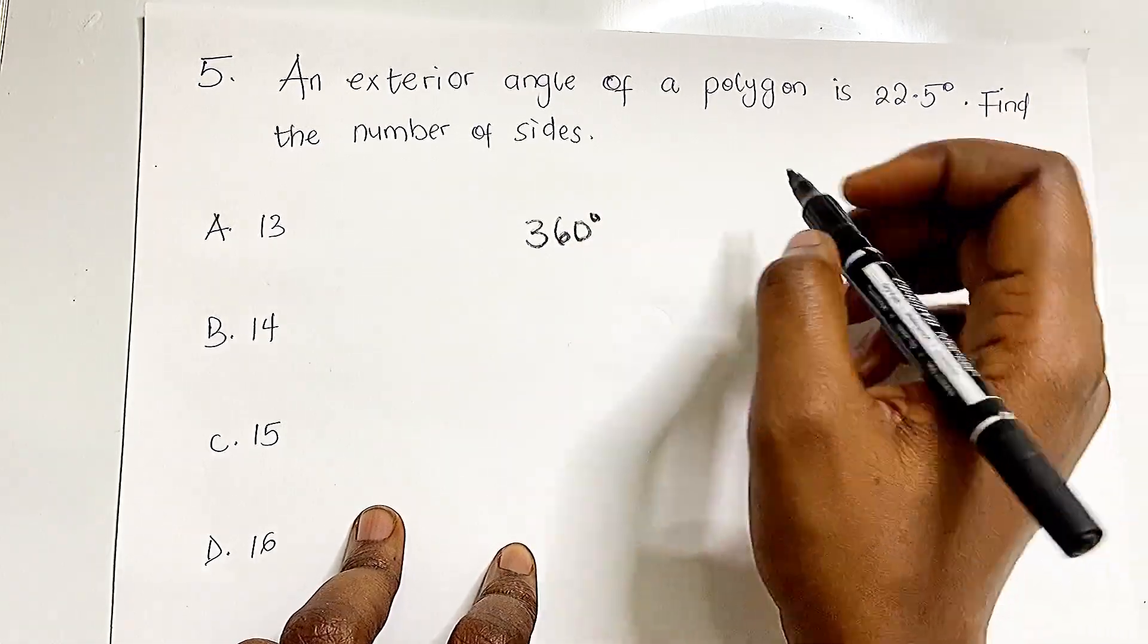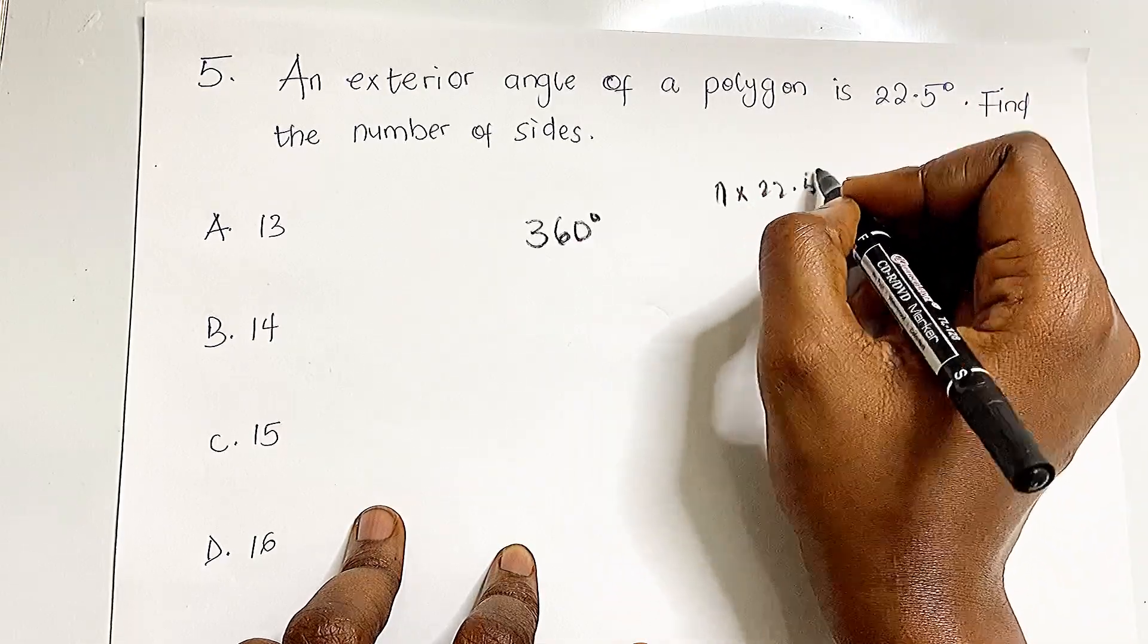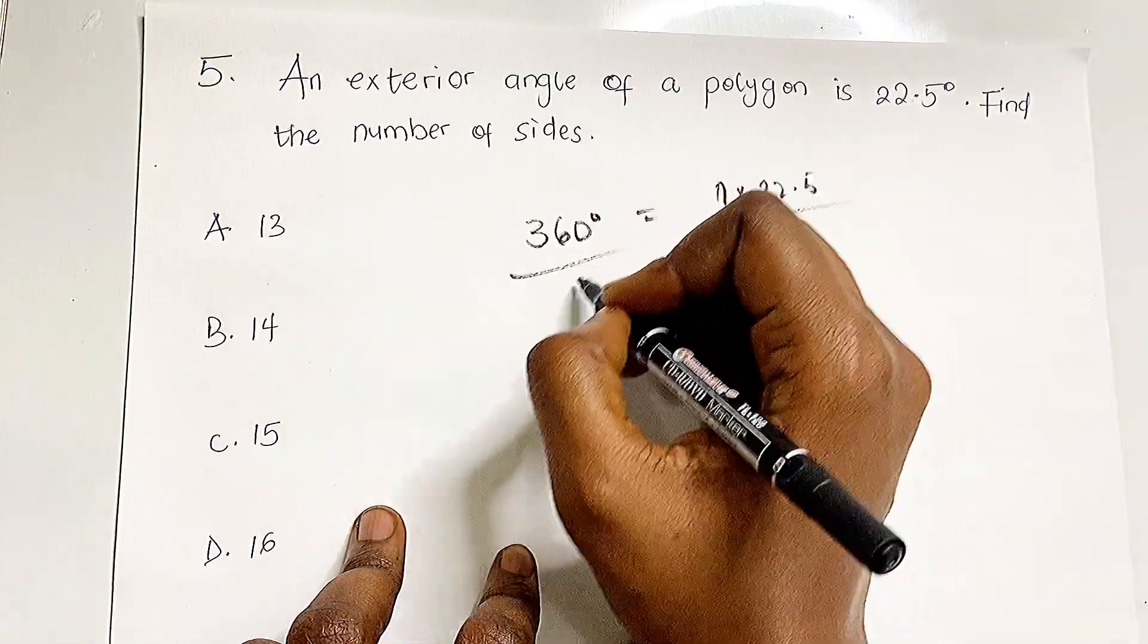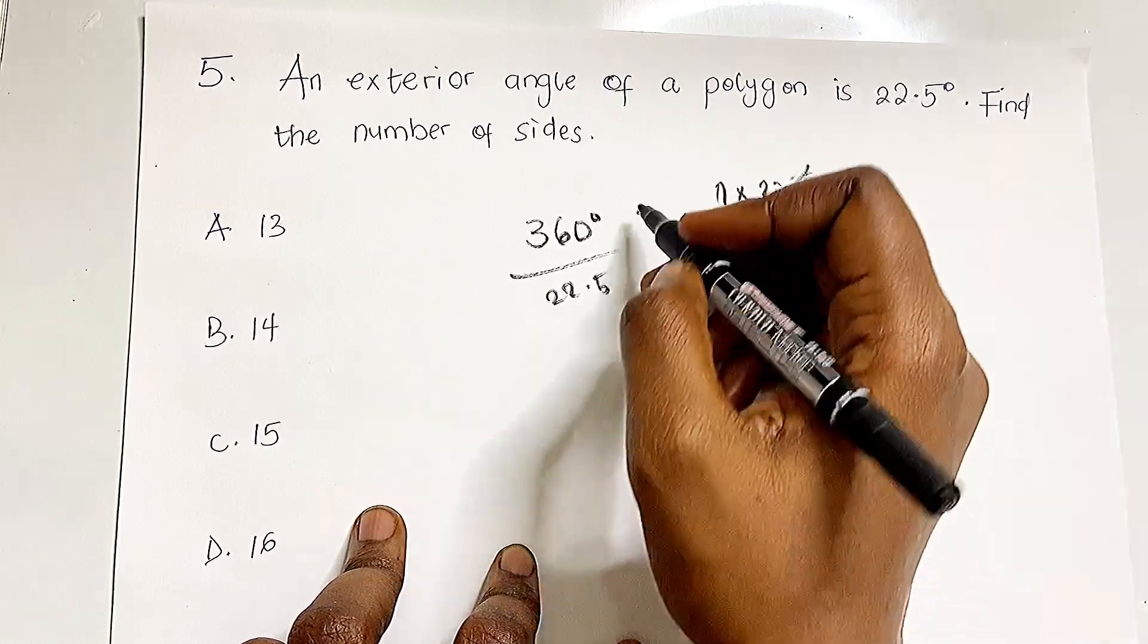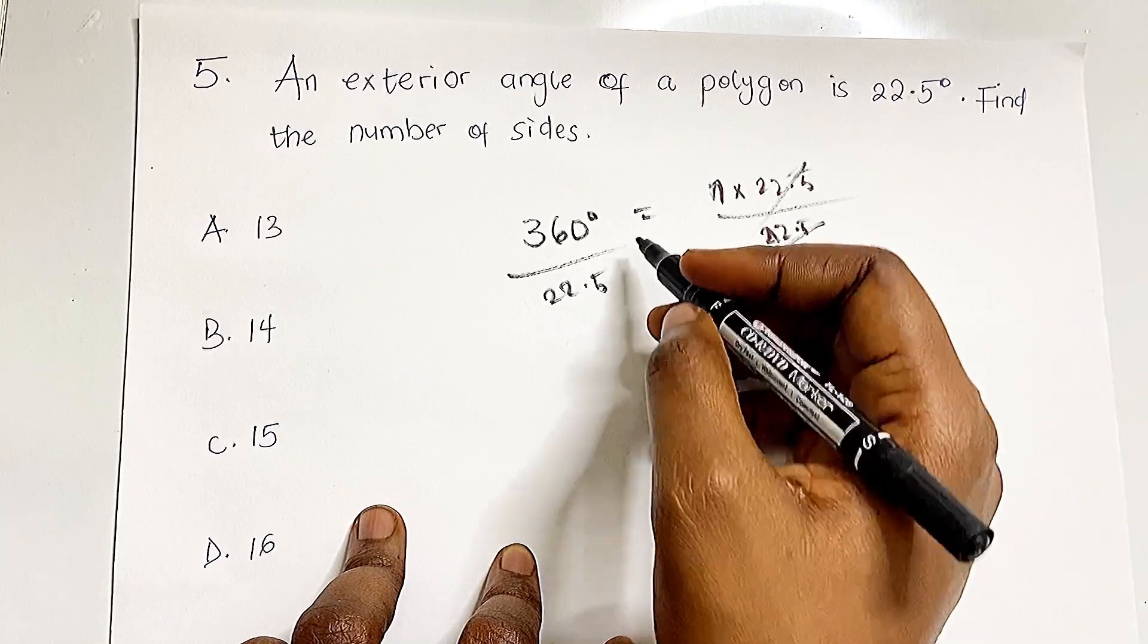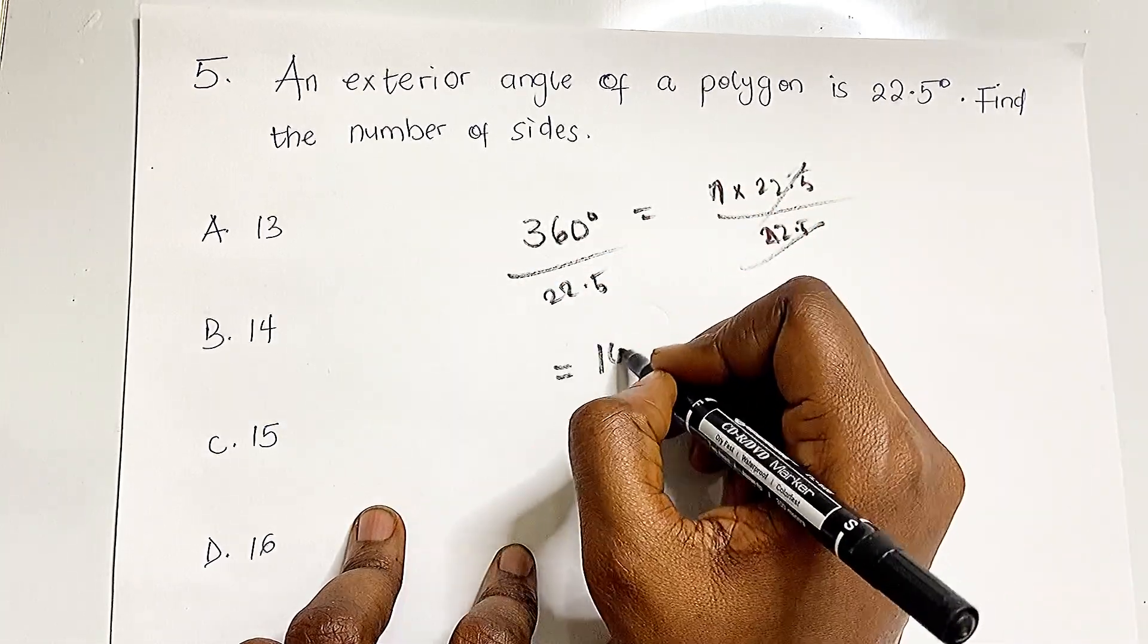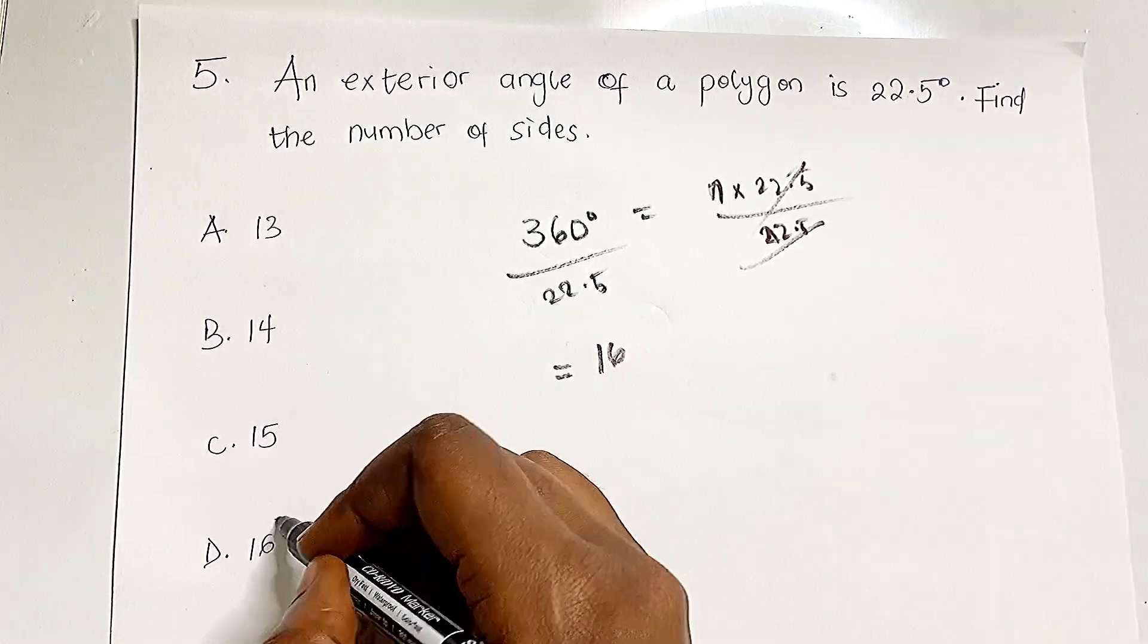So the number of sides (n) times 22.5 equals 360. Therefore n × 22.5 = 360. Dividing both sides by 22.5: n = 360 ÷ 22.5 = 16. The polygon has 16 sides. What is the name of this polygon?